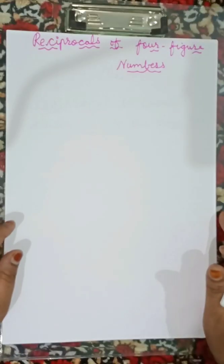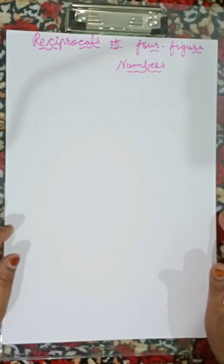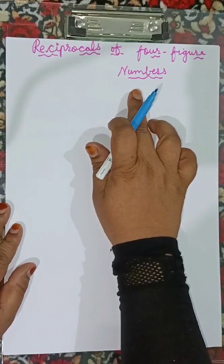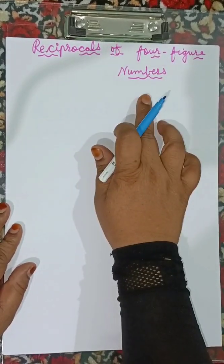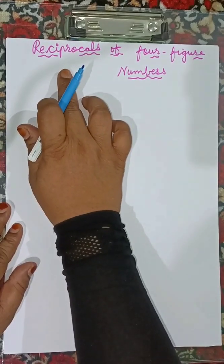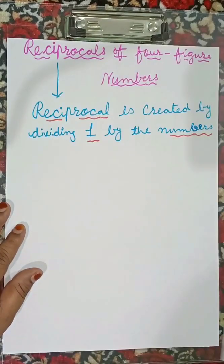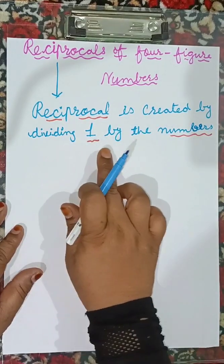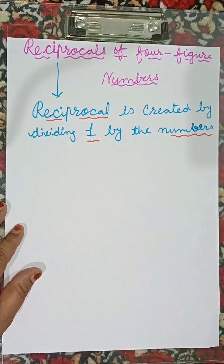Hello, my dear students, welcome to my class. I am Homera Nas. Today I am teaching you how to find out reciprocals of four-figure numbers using logarithmic tables. Before starting, what is a reciprocal? A reciprocal is found by dividing one by the number.